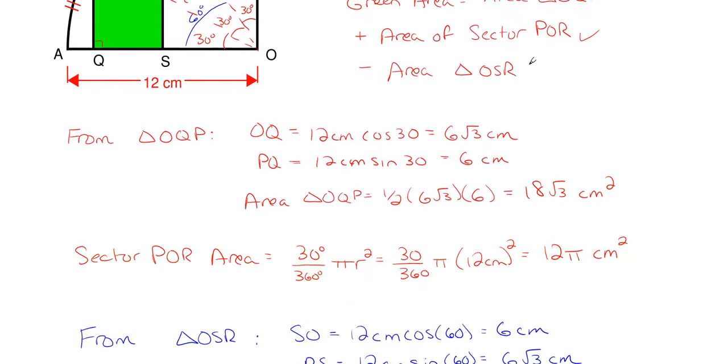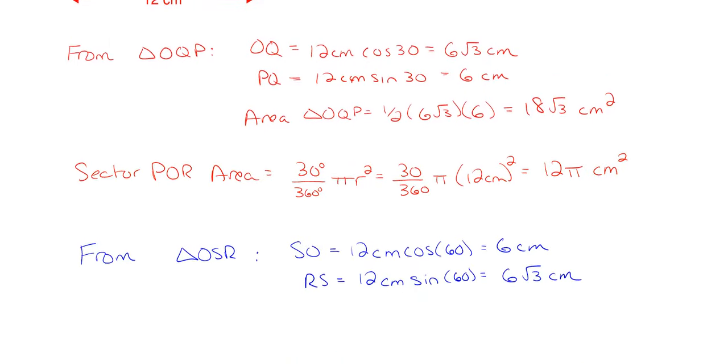So now I have that area or I have the dimensions and then I can get my area here of OSR which is just going to be one half 6 centimeters times 6 square roots of 3 centimeters.